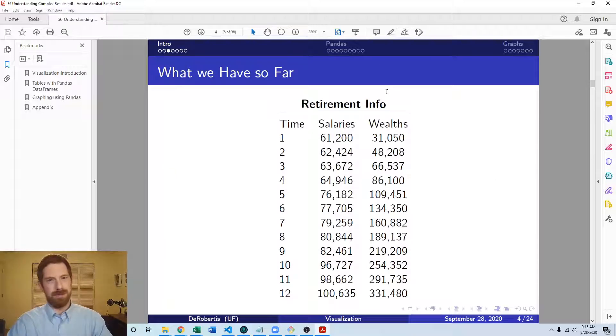Thinking about the way that we have our results so far in Excel, we have something like this which shows our salaries and wealth over time in a tabular format. That is the more basic form of visualization, just laying the numbers out in a table. You already get more context than just displaying the numbers, at least they're laid out in a structured way.